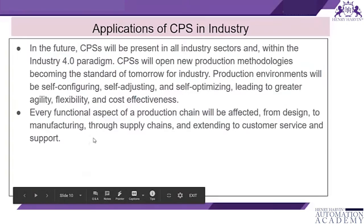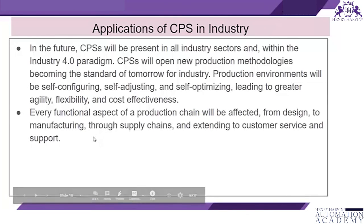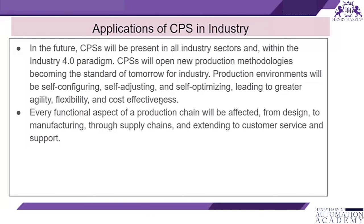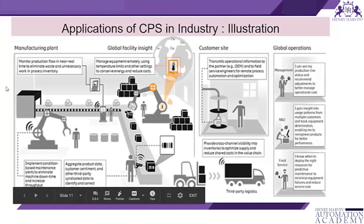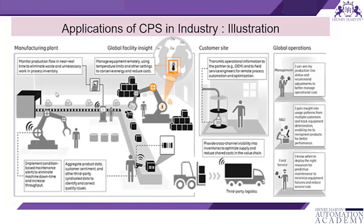As seen in these videos, CPS will be present in all industrial sectors and within the Industry 4.0 paradigm will open new production methodologies, becoming the standard of tomorrow. Production environments will be self-configuring, self-adjusting, and self-optimizing, leading to greater agility, flexibility, and cost effectiveness. Every functional aspect of the production chain will be affected — from design to manufacturing through supply chains, extending to customer services and support. In a smart manufacturing plant, there will be global facilities, customer sides, and global operations that self-optimize while humans intervene only at the right moments.